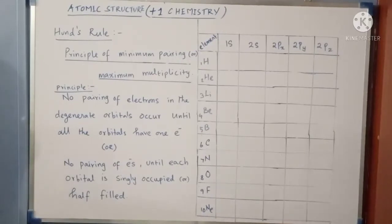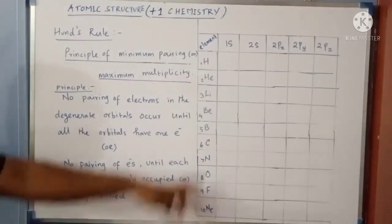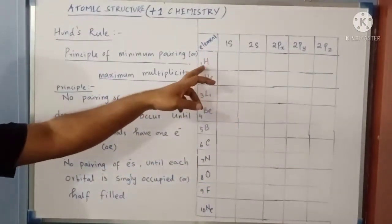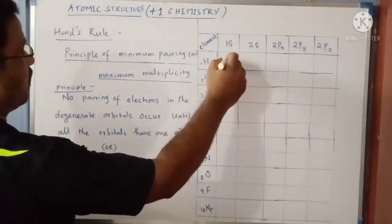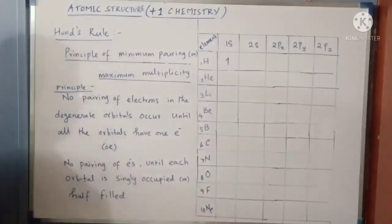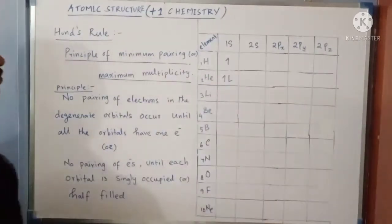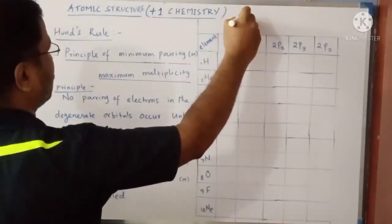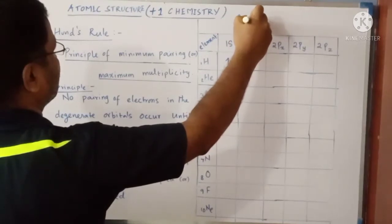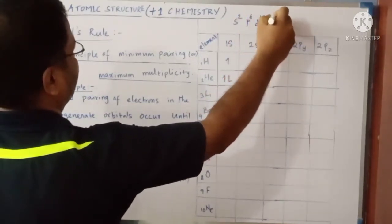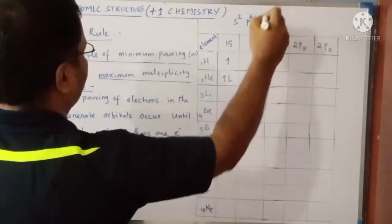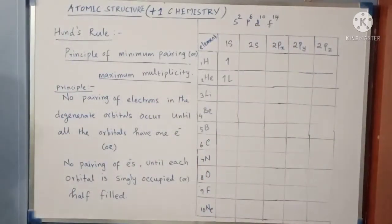Now we are going to see the explanation for Hund's Rule by writing the electronic configuration for the first 10 elements. I have written the element symbol with the atomic number. The first element, hydrogen, with atomic number 1, has 1 electron, so that electron will be added in the 1s orbital. The second element, helium with atomic number 2, has 2 electrons added in the same 1s orbital, because the S orbital can have a maximum of 2 electrons, P orbital 6, D orbital 10, and F orbital 14.